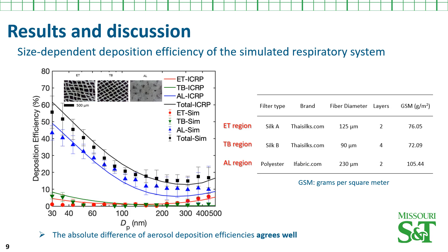Results and discussion. Among the materials tested, we found three filters whose filtration efficiencies closely match those of the ET, TB, and alveolar regions at a relative humidity of 90%. Vendor information and microscopic images of the filter media are shown in this figure. From the particle deposition efficiency figure, we can observe that the difference in aerosol deposition efficiency between the simulated respiratory system and the ICRP model agrees well. This system can be used to simulate particle deposition in the human respiratory system and produce secondhand smoke.